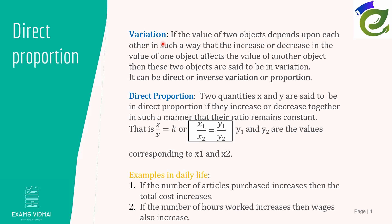First, let's see what variation is. If the values of two quantities depend on each other such that the increase of one will impact the other, then these two values are said to be in variation. It is of two types: direct proportion and indirect proportion.